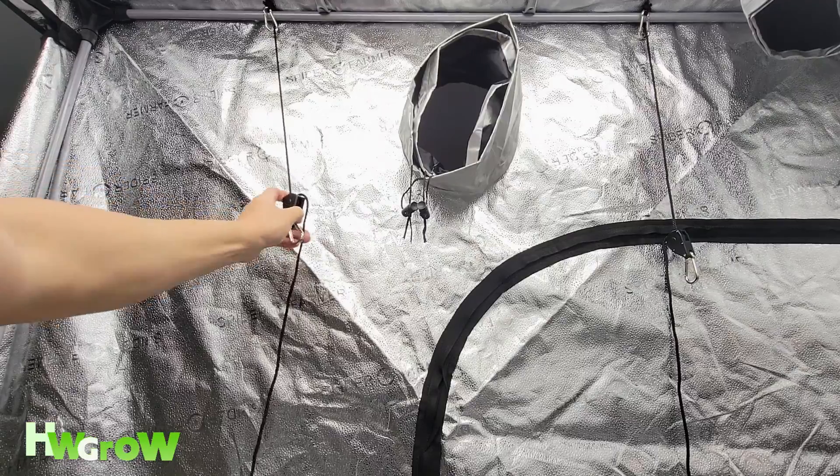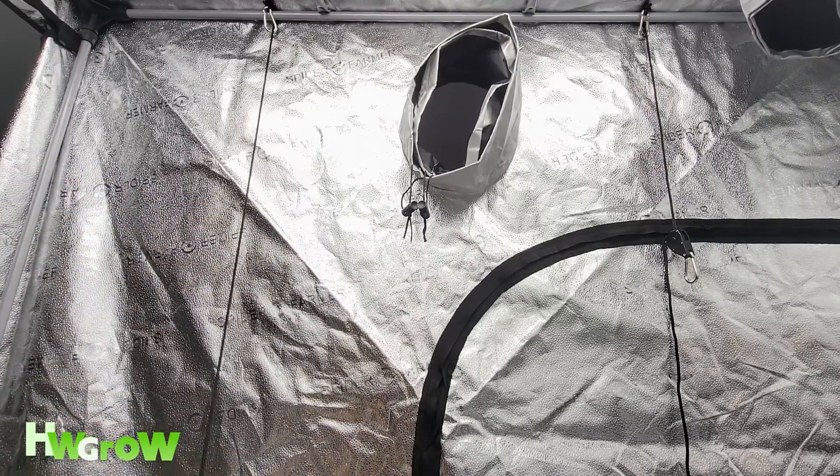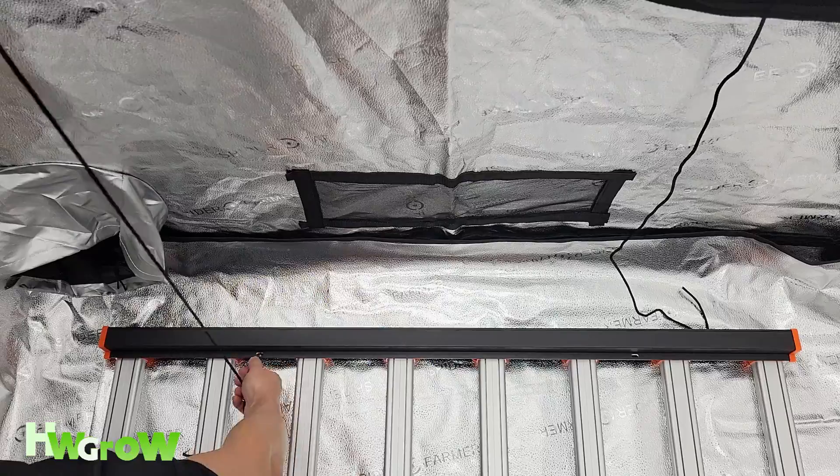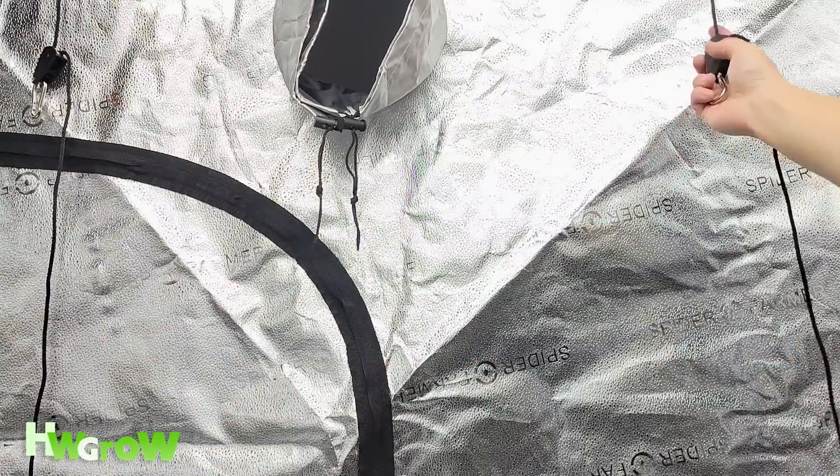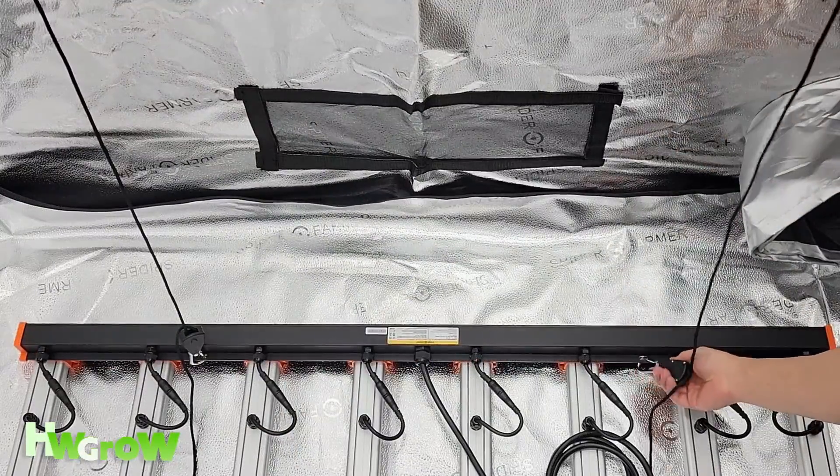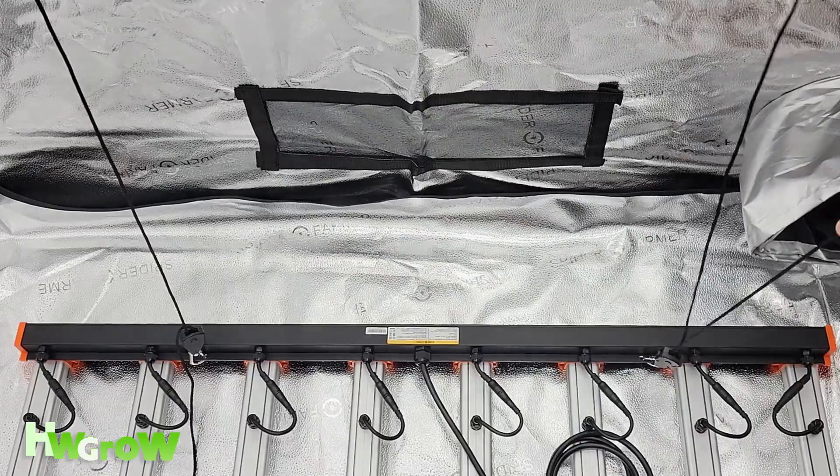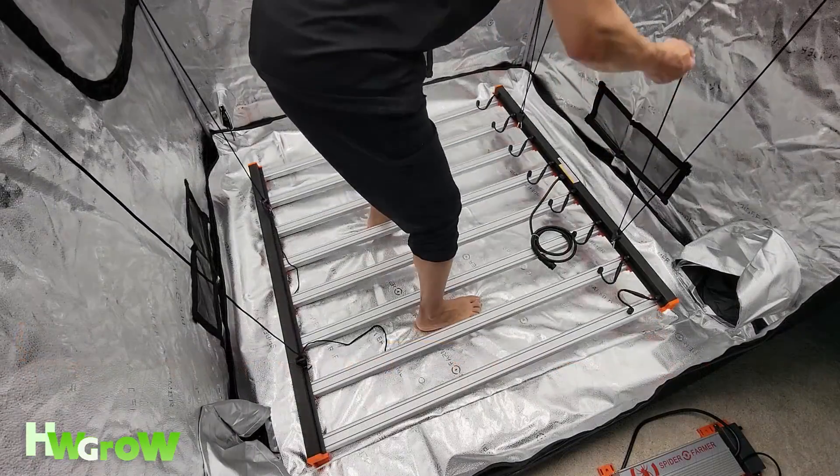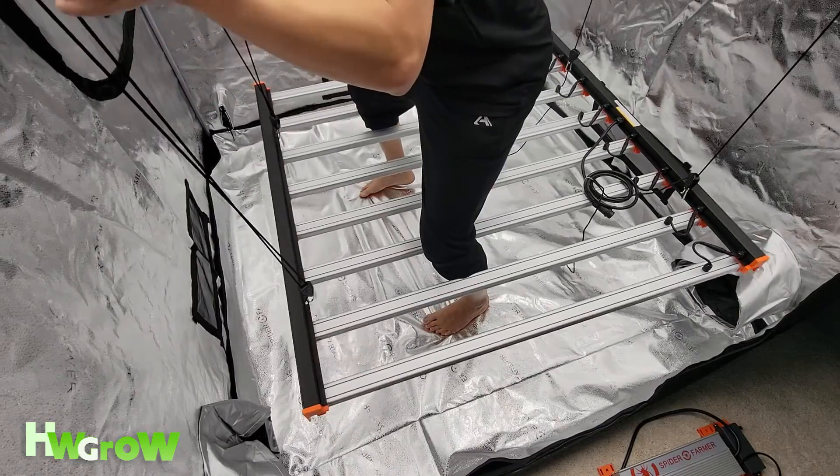Next, grab the clip that's connected to the pulley and pull out enough slack so you can clip it onto its corresponding hanging hole. Do this for all four sides, and when they're all clipped in, pull the loose rope so you can elevate the light about 2 feet above the floor.